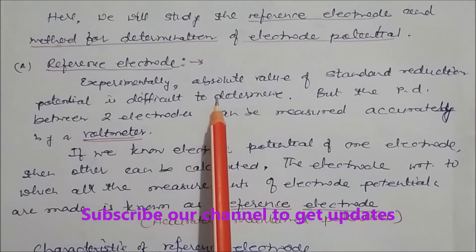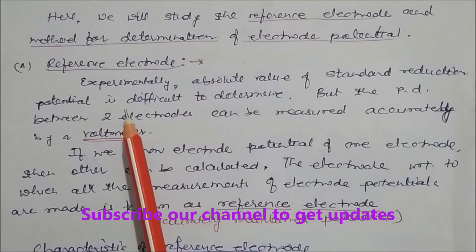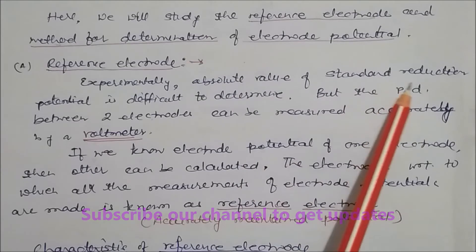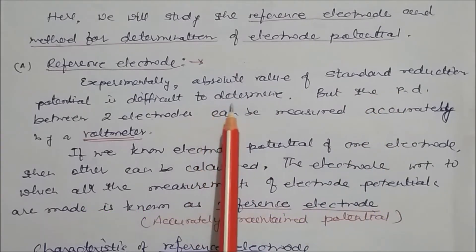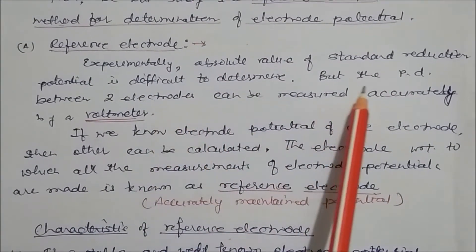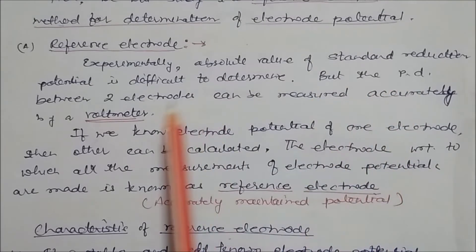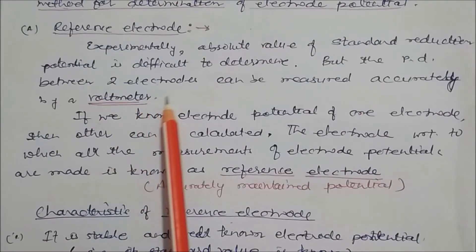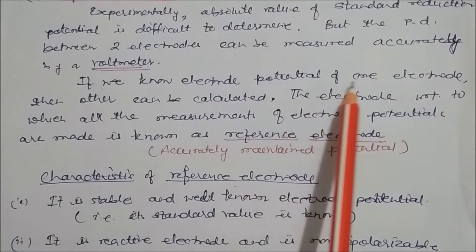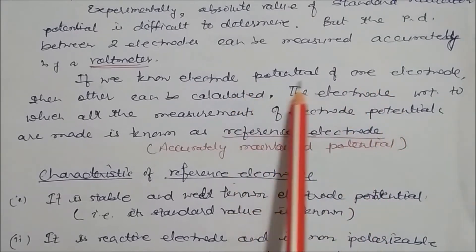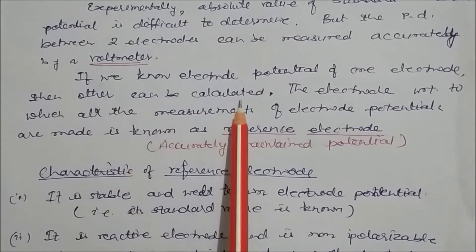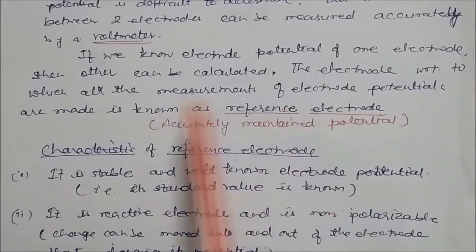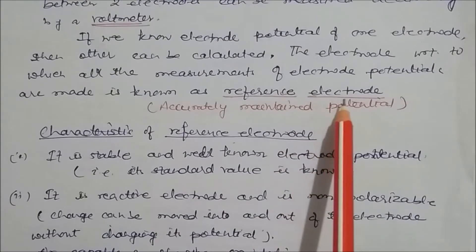Experimentally, the absolute value of a standard reduction potential is very difficult to determine — this is important to remember. However, the potential difference between two electrodes can be measured accurately by a voltmeter. So if you know the electrode potential of one electrode, the others can be easily calculated. The electrode with respect to which all measurements of electrode potential are made is called the reference electrode.